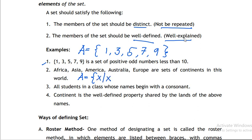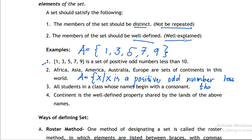To write it in the rule or defining method, we write: A = {x | x is a positive odd number less than 10}. We read this as 'set A is the set of all x such that x is a positive odd number less than 10.' That is how we write the rule or defining method.